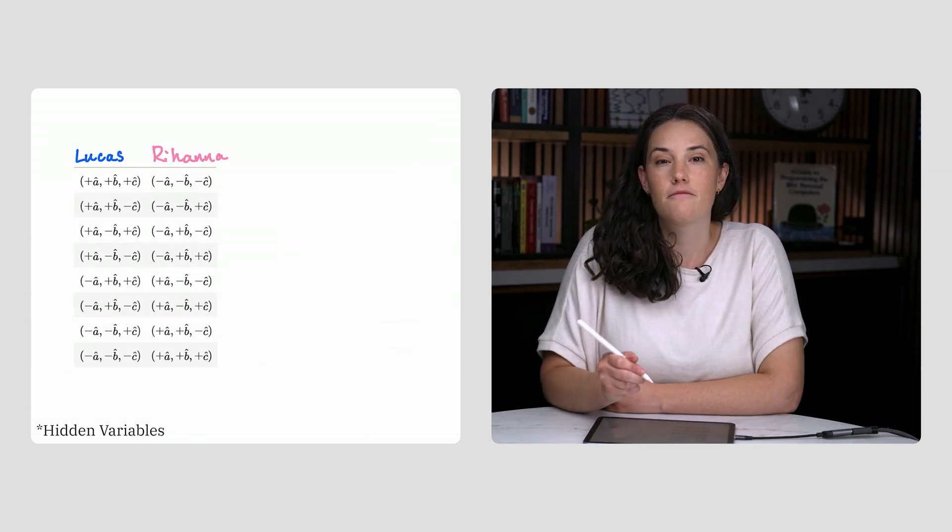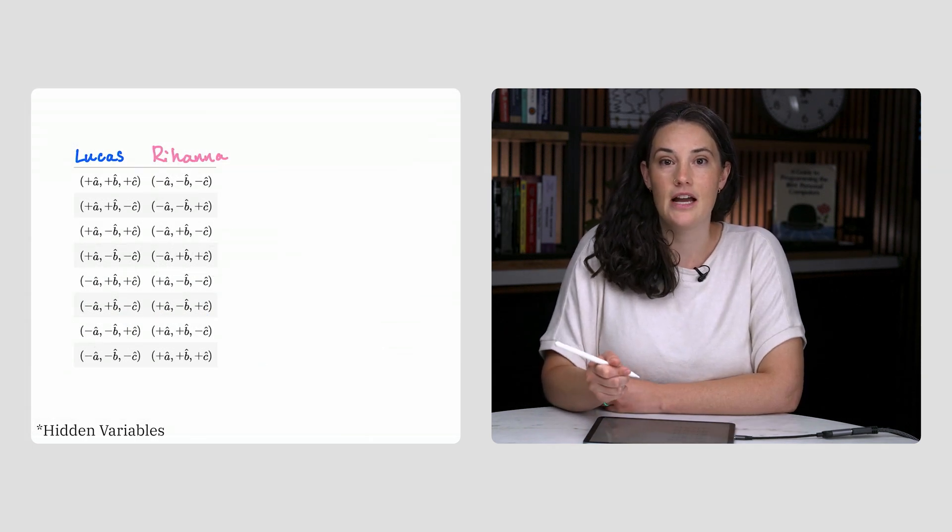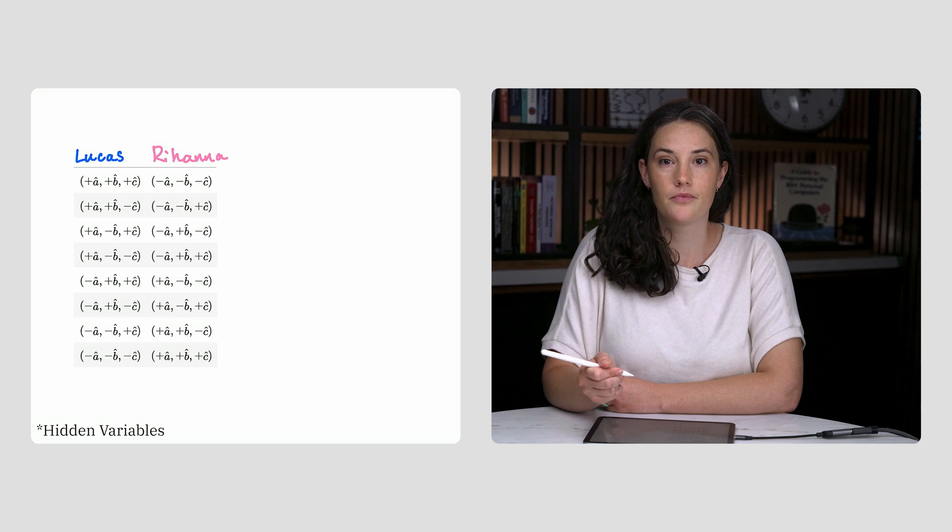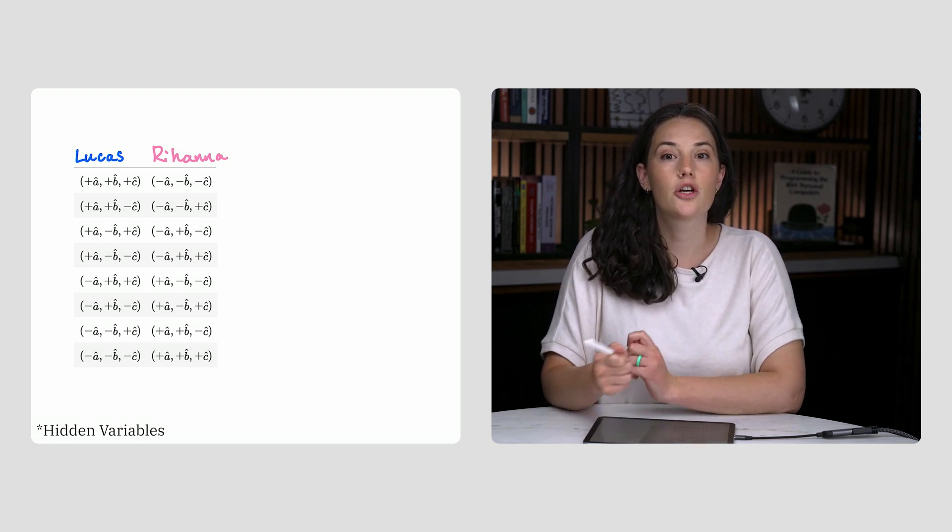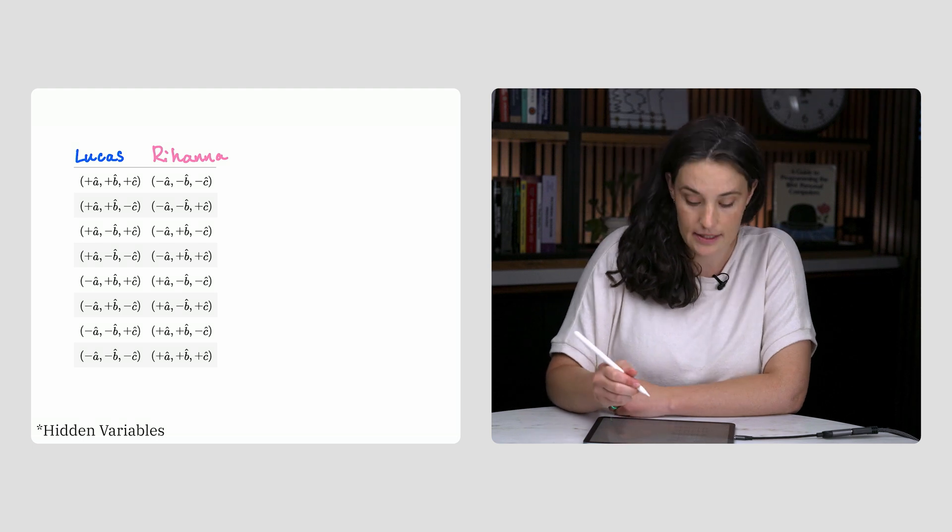There are eight sets of possible instructions that satisfy this spin zero constraint. So each time a new pair of particles is sent to Lucas and Rihanna, it could contain any one of these eight sets of instructions.